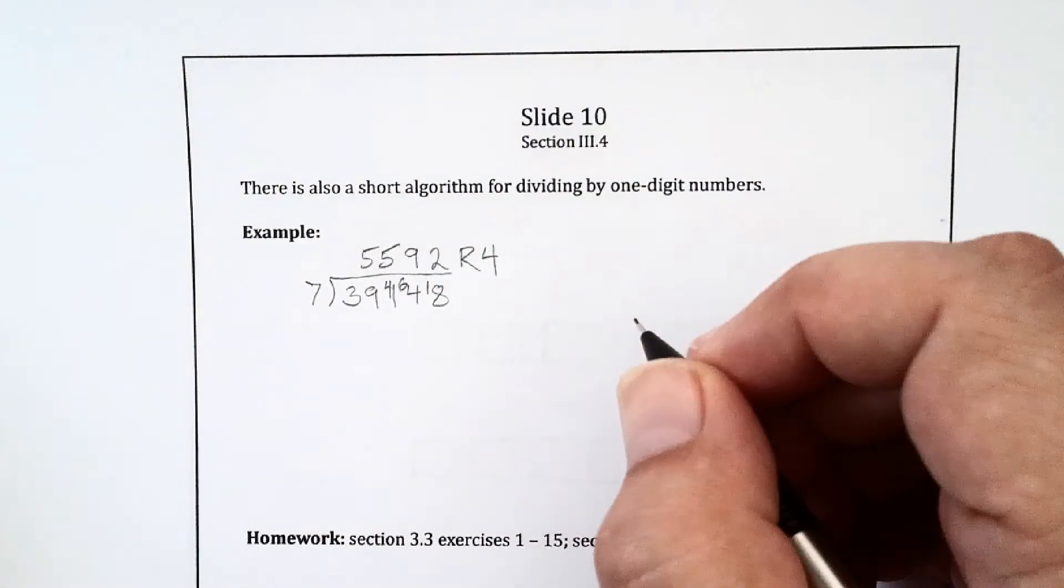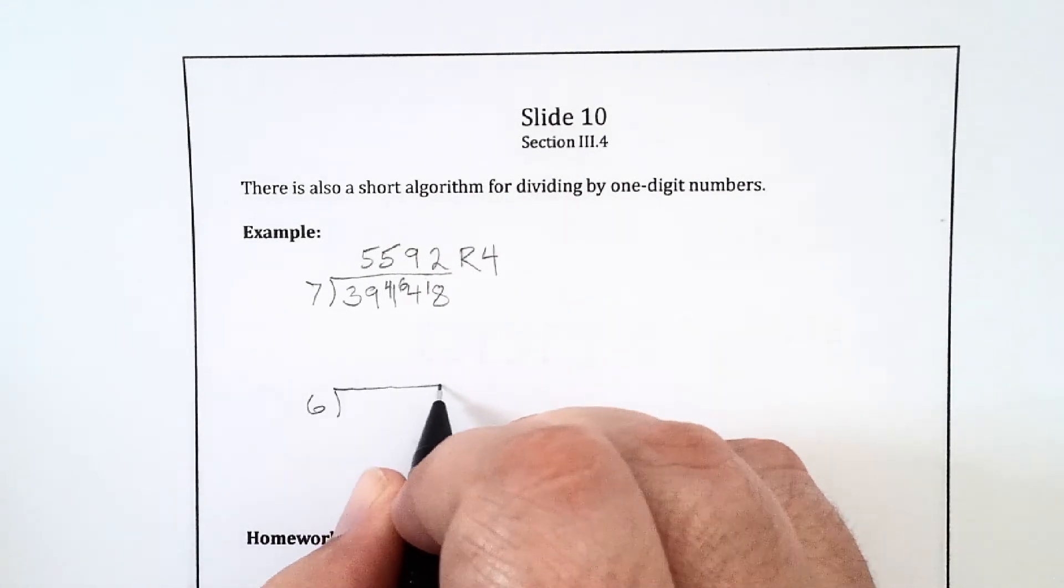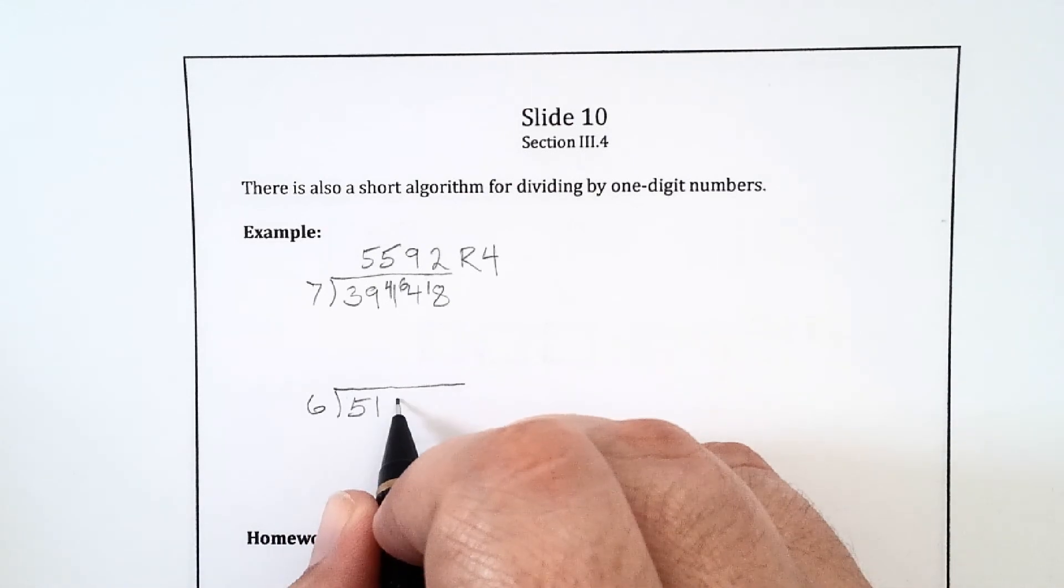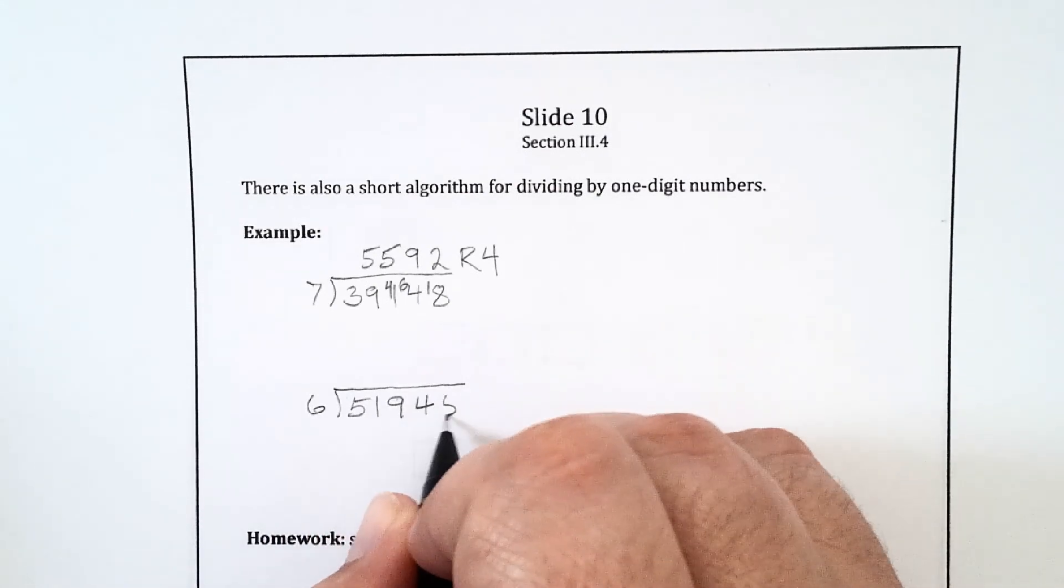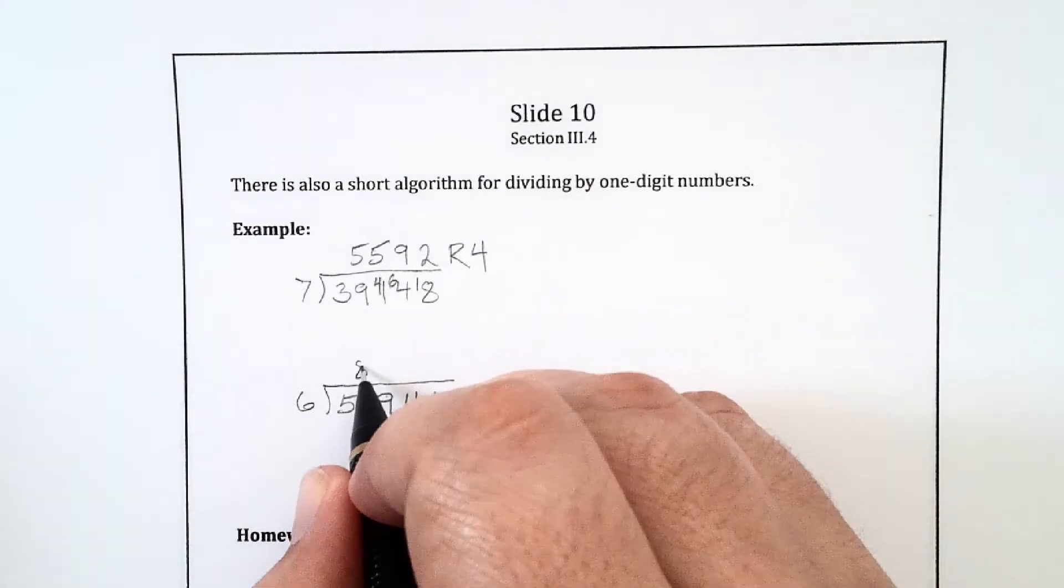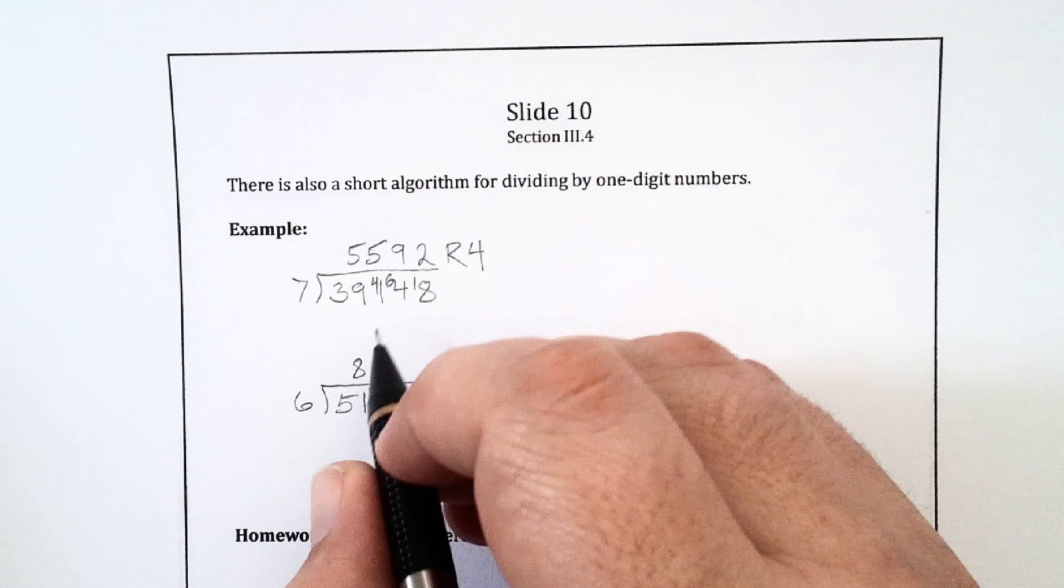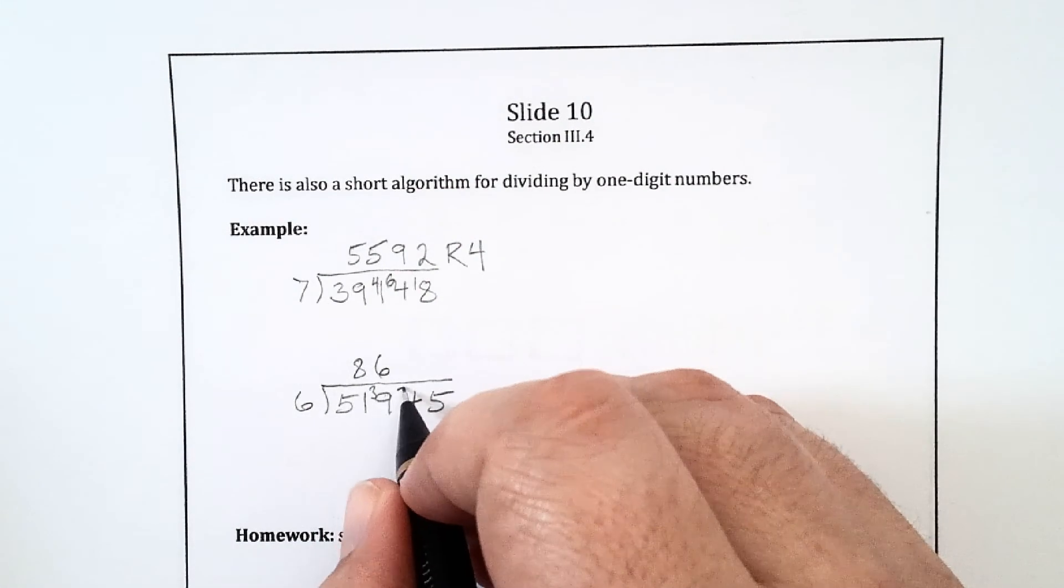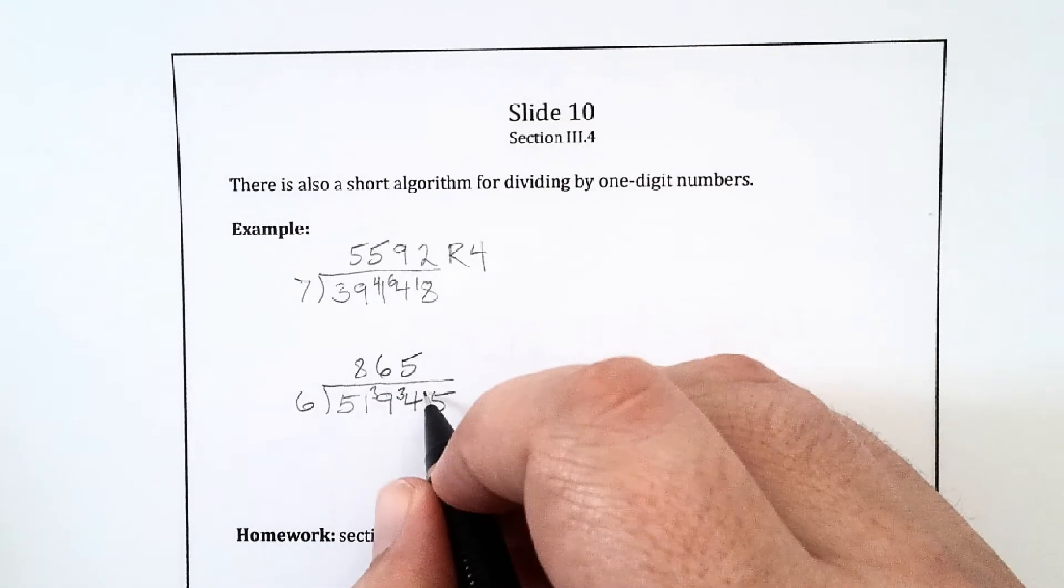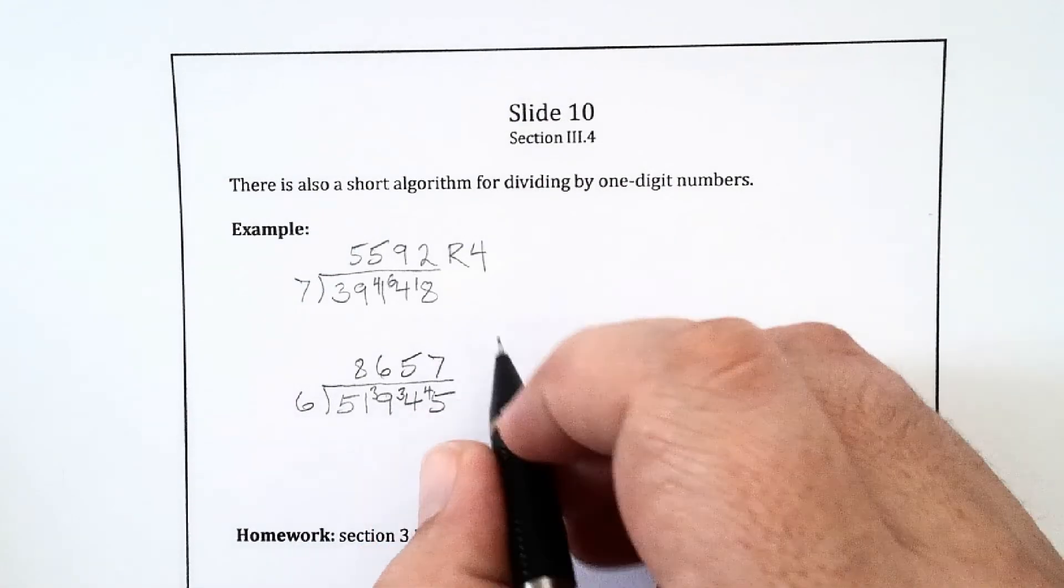Let's do one more of these. Let's divide 6 into 51,945. Six goes into 51 eight times with a remainder of 3. Six goes into 39 six times with a remainder of 3. Six goes into 34 five times with a remainder of 4. Six goes into 45 seven times with a remainder of 3.